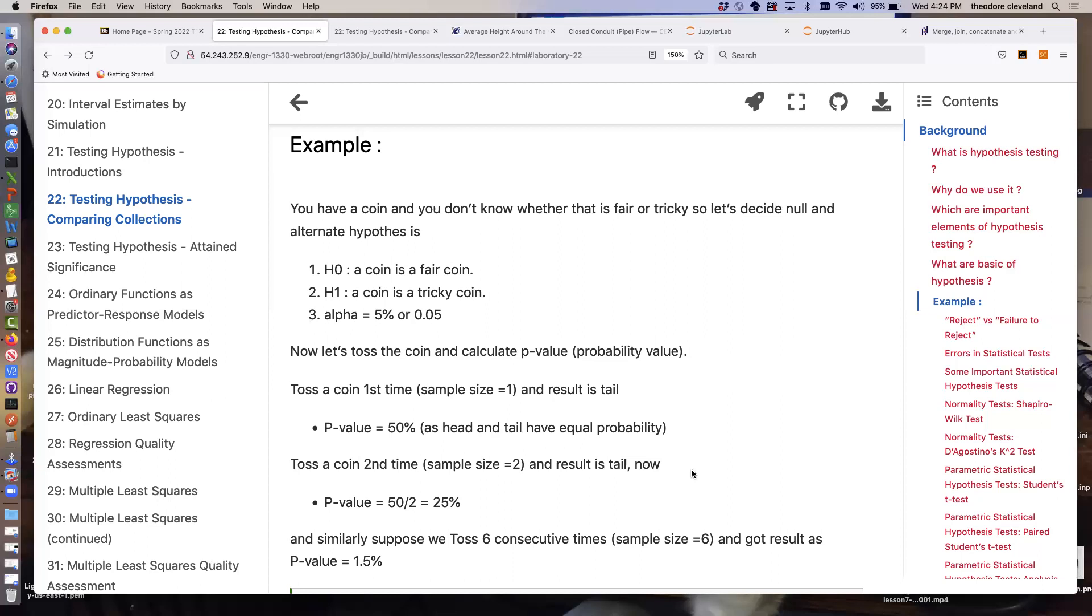So now we want to test the coin. In other words, we want a sample from the population of all the possible flips of the coin. So we flip the coin once. That's a sample size of one. If the coin's fair, the probability that it's going to turn up a tail is 50%. We haven't attained significance of 50%. Its p-value is 50%. We still don't know if it's fair or tricky or not. Certainly not after one flip. That's not enough information.